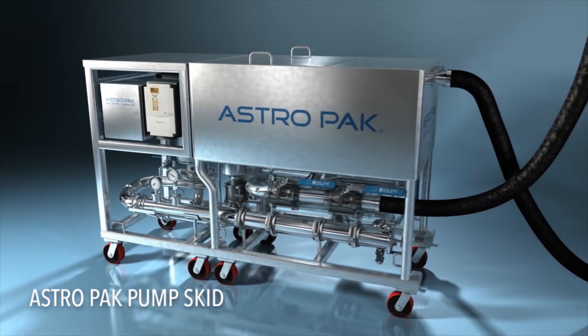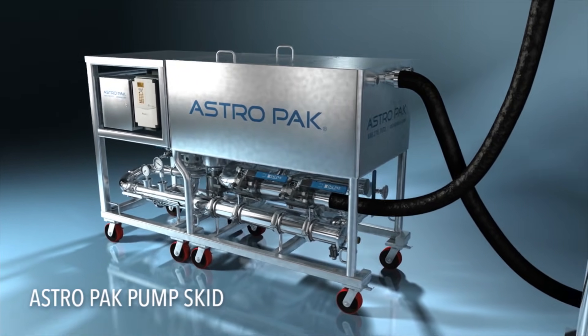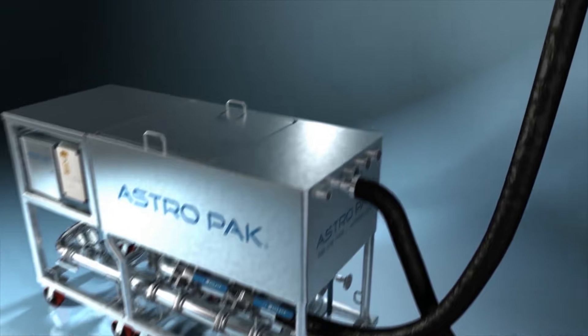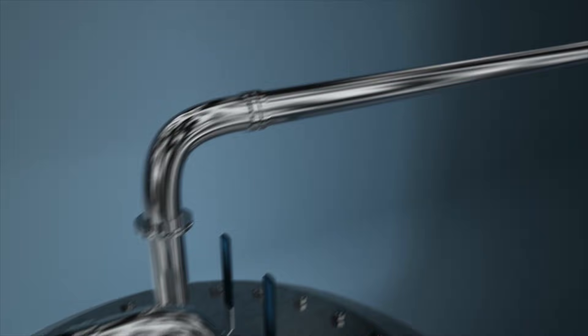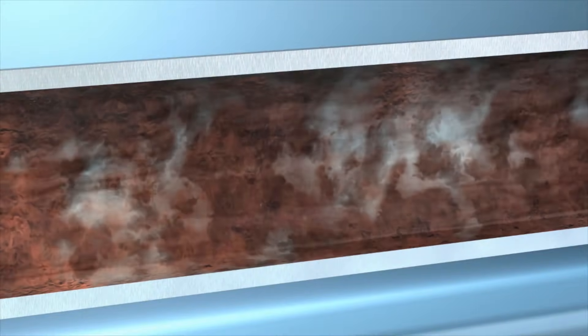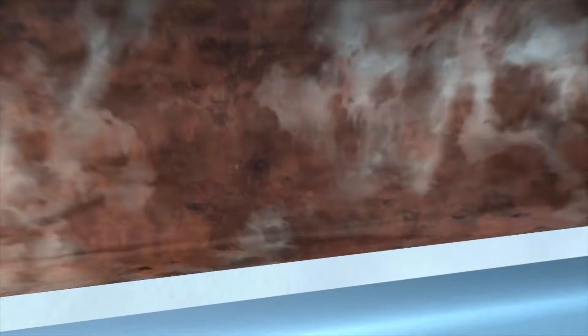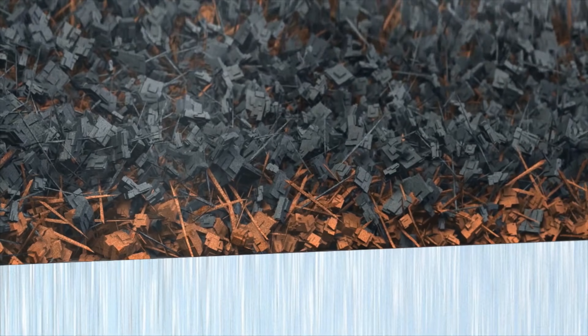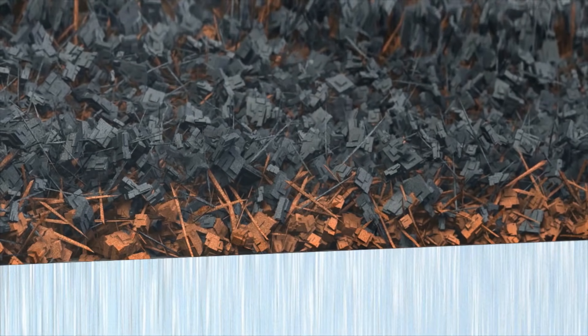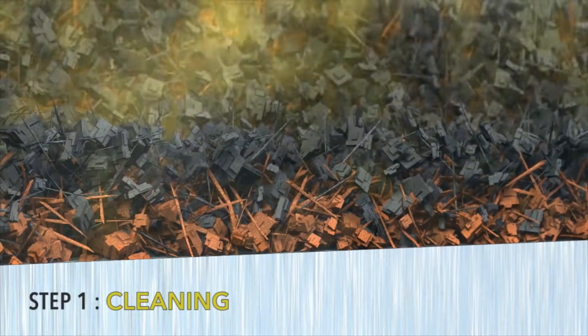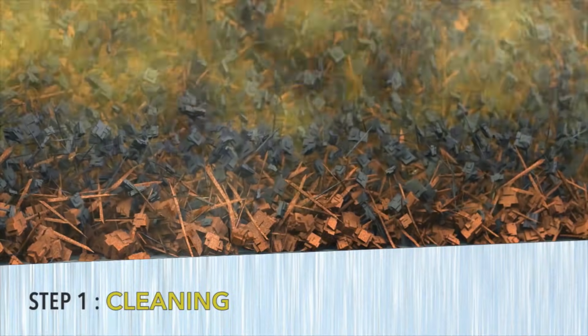AstroPak provides a skid that can both mix the chemistry and circulate it through temporary hoses into vessels and distribution equipment. As we begin to process, we can slowly remove the organics that are in the rouge during our cleaning process.